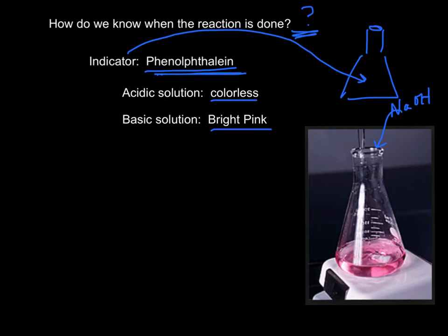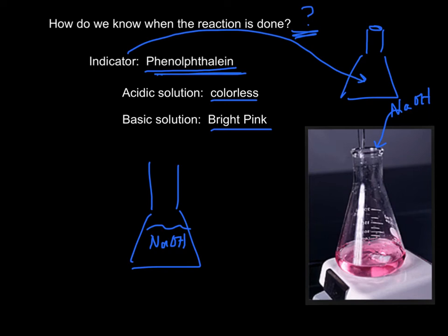As we add the NaOH, it reacts with the HCl, so the pink color disappears. We add some more NaOH and see a pink color, but then the NaOH reacts with the HCl and the pink color disappears again. We do this for a while until eventually, when we add the NaOH, there's no more HCl left. All we have now are the products and a little bit of extra NaOH, so the solution turns pink and stays pink — and that tells you the reaction is done.